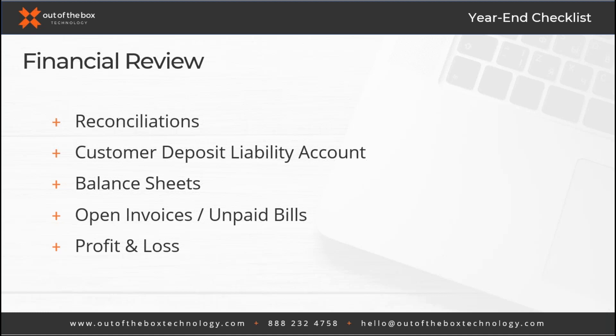Next on the financial review is the balance sheet — not typically everyone's favorite report. In a nutshell, your balance sheet is your assets, your liabilities, and your owner's equity. I always tell my customers it's the three O's: what you own (assets), what you owe (liabilities), and what is left over (owner's equity). The balance sheet is divided into two sections: assets, and then liabilities and owner's equity. For your year-end review, a detailed review of each balance sheet account should be performed.